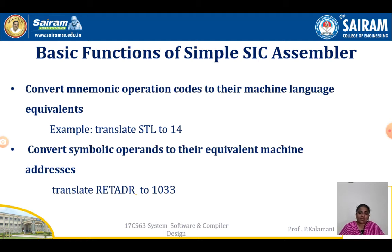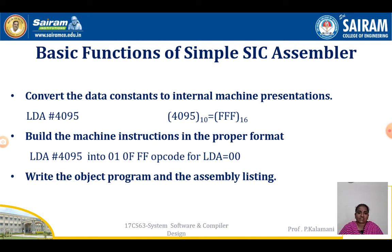For example, in the book example, it will translate RETADR as a symbol to 1033. The next function is it will convert data constants to their internal machine representation. For example, with immediate addressing mode, LDA #4095 — that 4095 is a decimal value that should be converted into hexadecimal before being stored into memory. So 4095 will be converted to hexadecimal and we get 3FF. That conversion should also be done by the assembler.